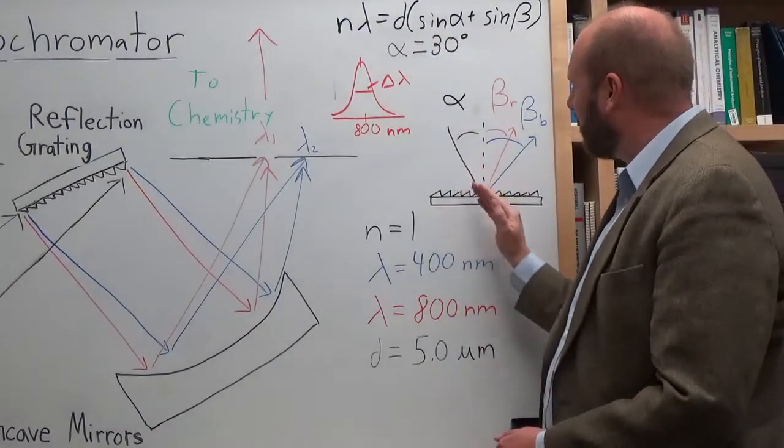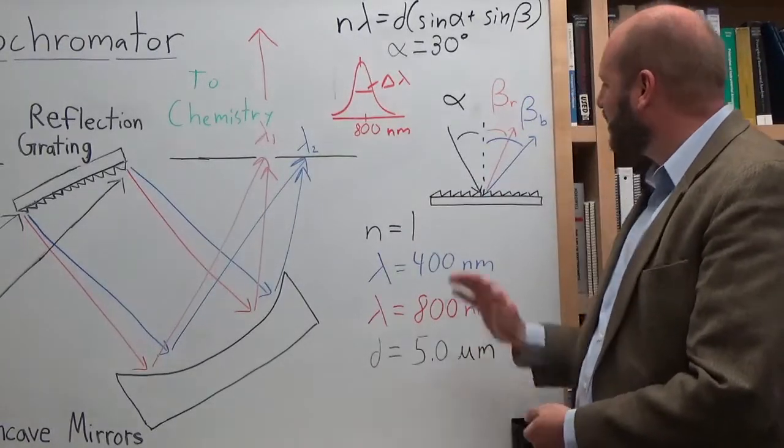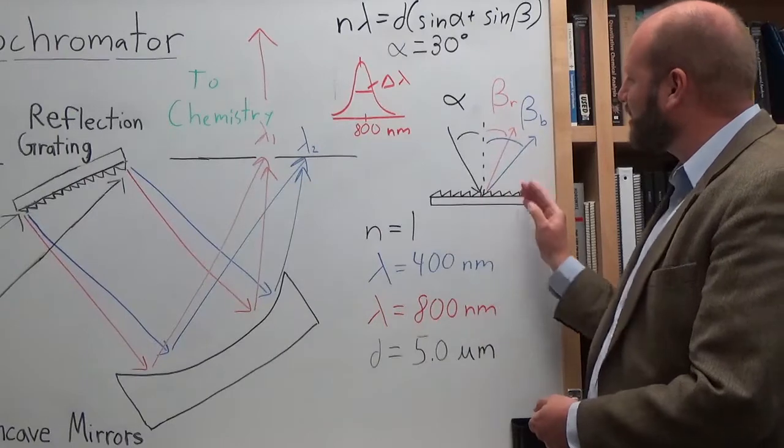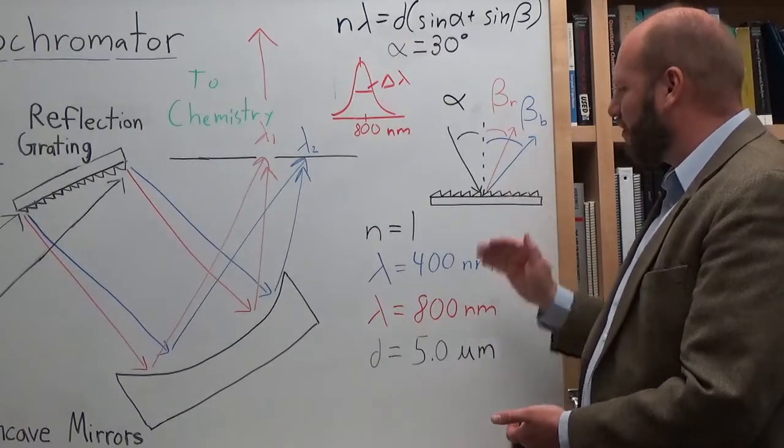Alpha is the angle that my incident light hits my diffraction grating at, my parallel light rays. And beta is the angle that the different wavelengths of light will leave at. So for any one given wavelength, you can solve the angle.